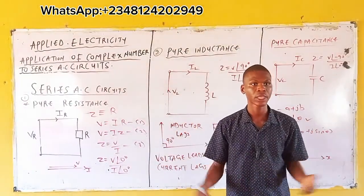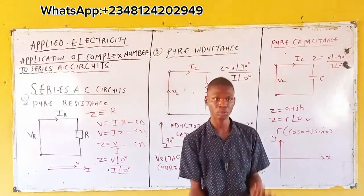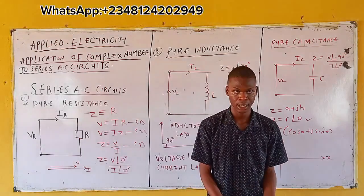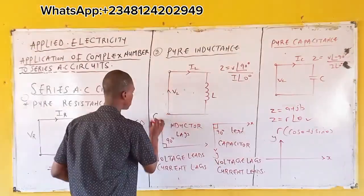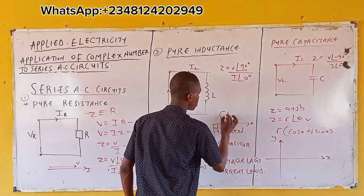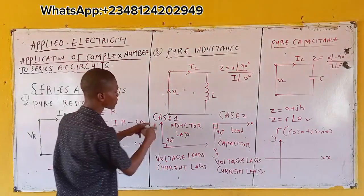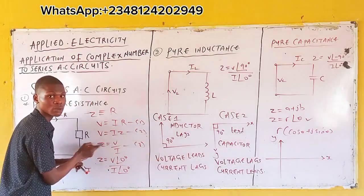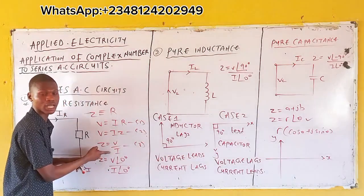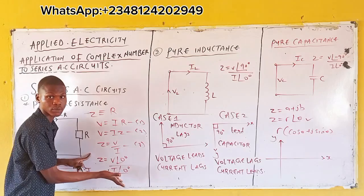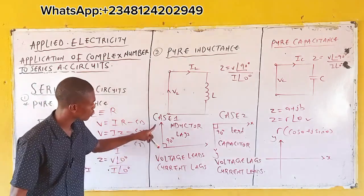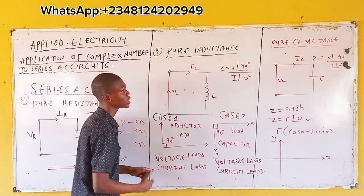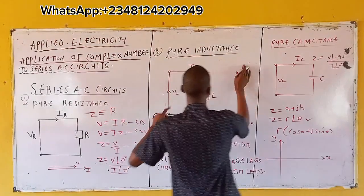Practically, when we say lag and lead: if one value is greater, automatically the other becomes lesser. Call this case one and case two. For case one — the inductor — voltage leads while current lags. Writing equation three: your impedance Z equals voltage leading by 90 degrees divided by current.